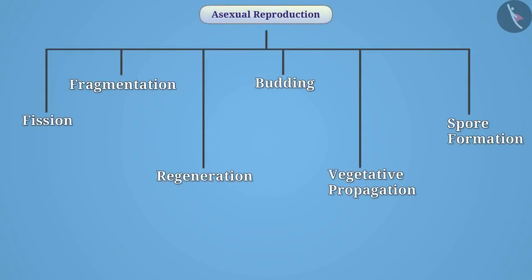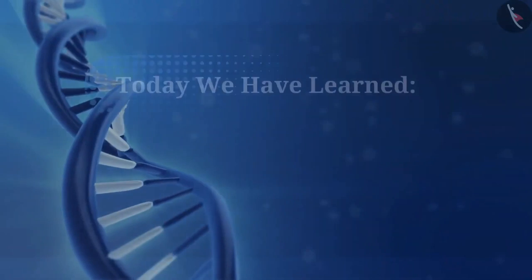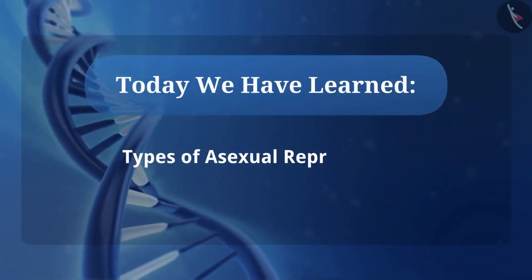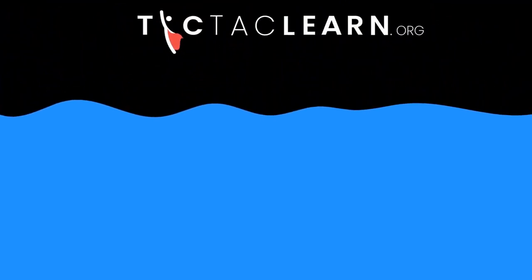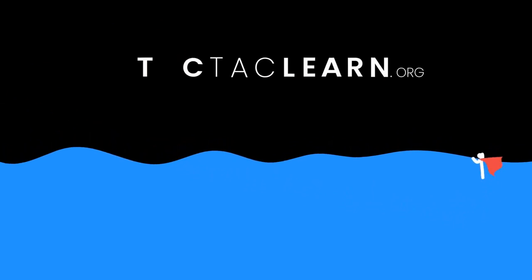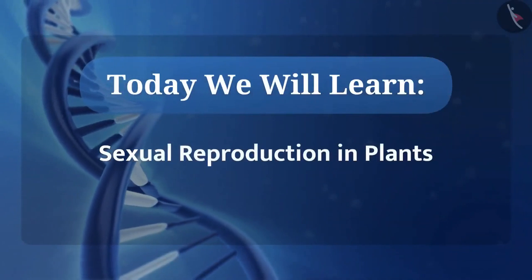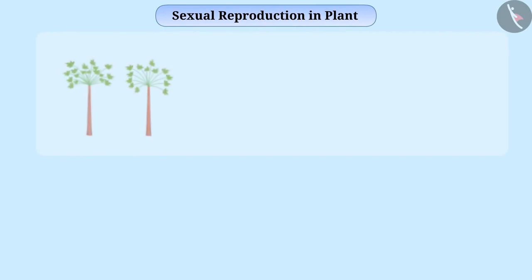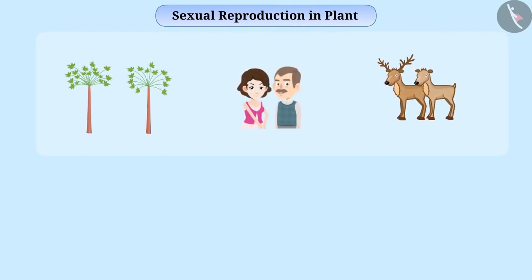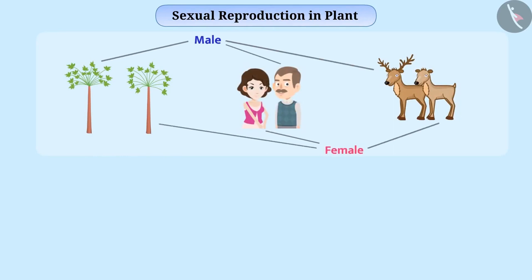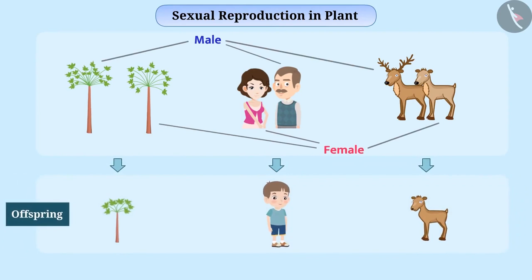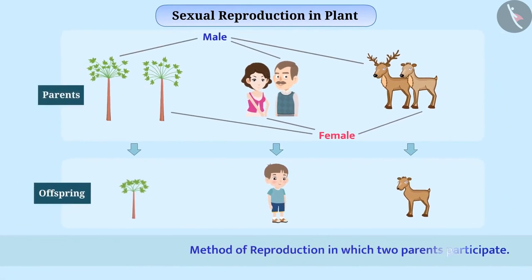Now you must have understood various methods of asexual reproduction. We will learn about sexual reproduction in plants. There are many organisms such as flowering plants, humans, and various animals which require male and female to produce offspring. Such a method of reproduction in which two parents participate is called sexual reproduction.